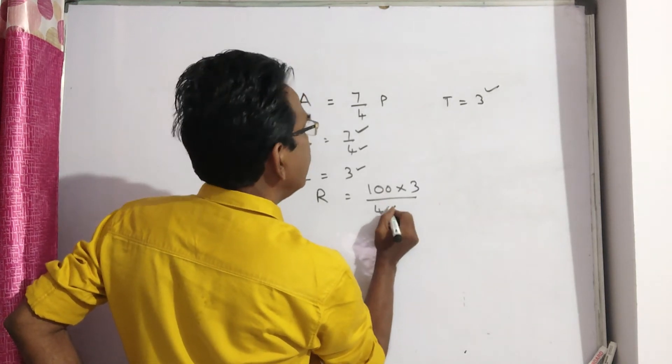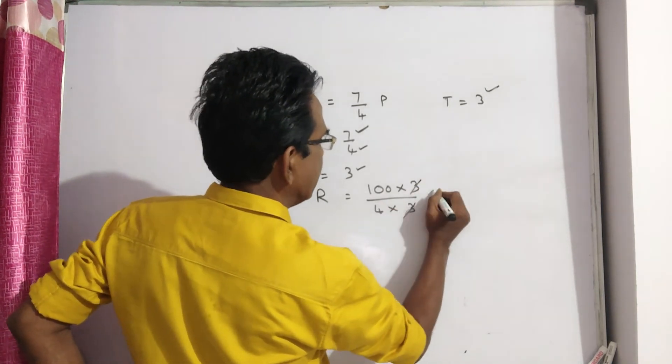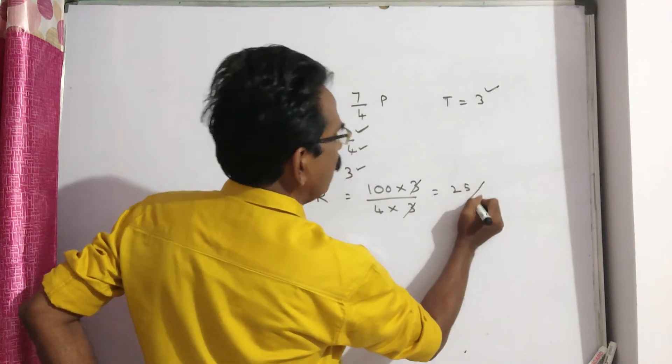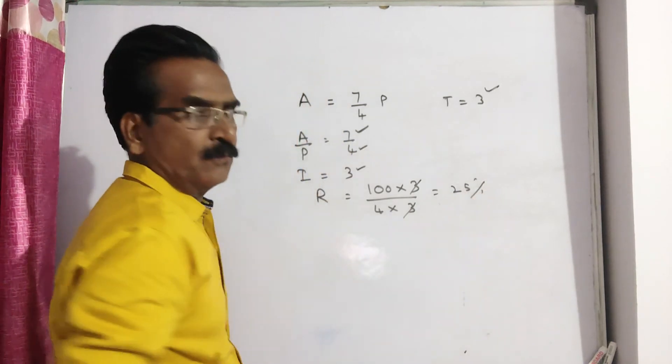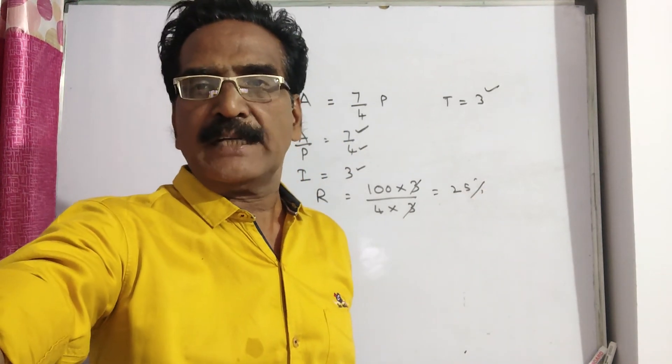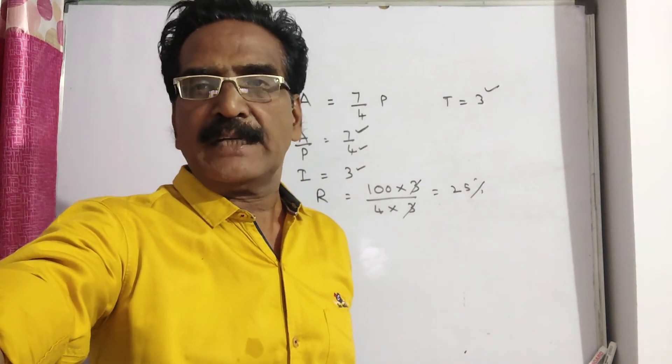100 times I, divided by P into T: 4 into 3. The 3s cancel, giving 25. So R is equal to 25%, friends. Thank you.